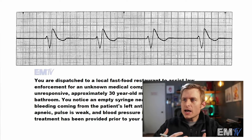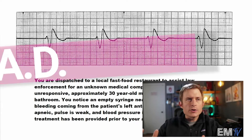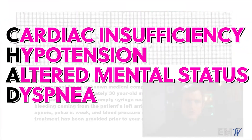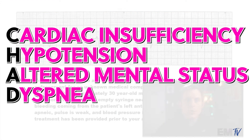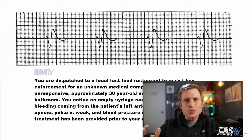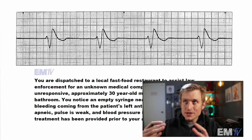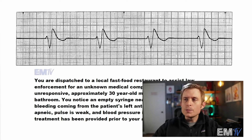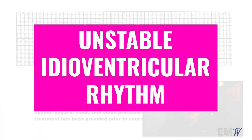For my criteria that I use for determining stability, I use the acronym CHAD, which stands for cardiac insufficiency, hypotension, altered mental status, and dyspnea. Based on this patient's initial presentation as well as their vital signs — blood pressure is 60, breathing is zero — this patient is unstable. So my final diagnosis for Static Cardiology would be an unstable IVR, or an unstable idioventricular rhythm.